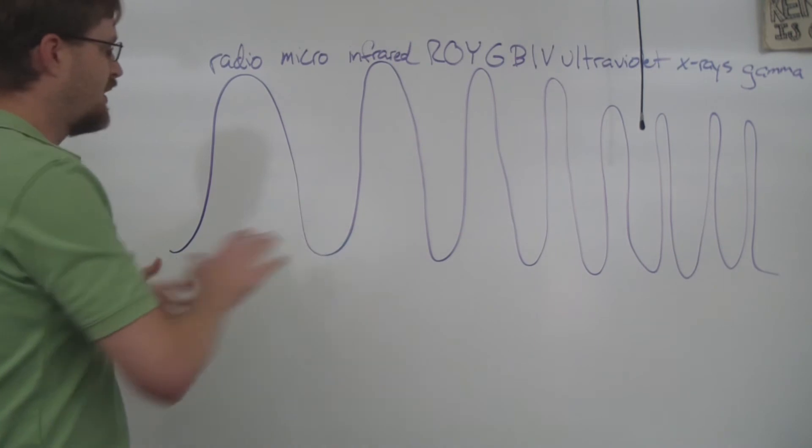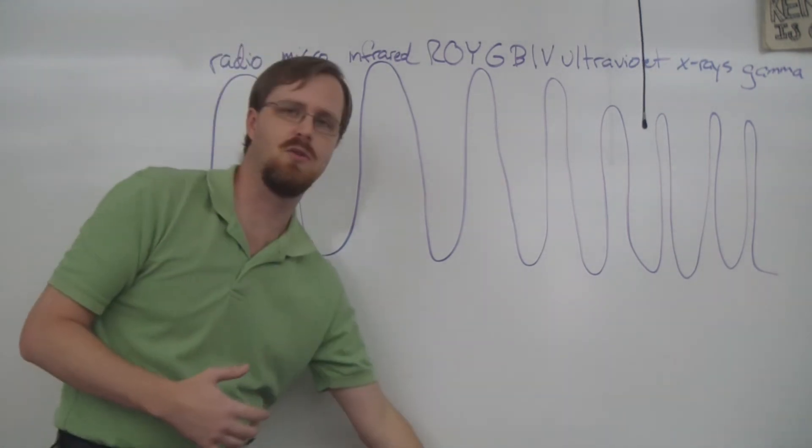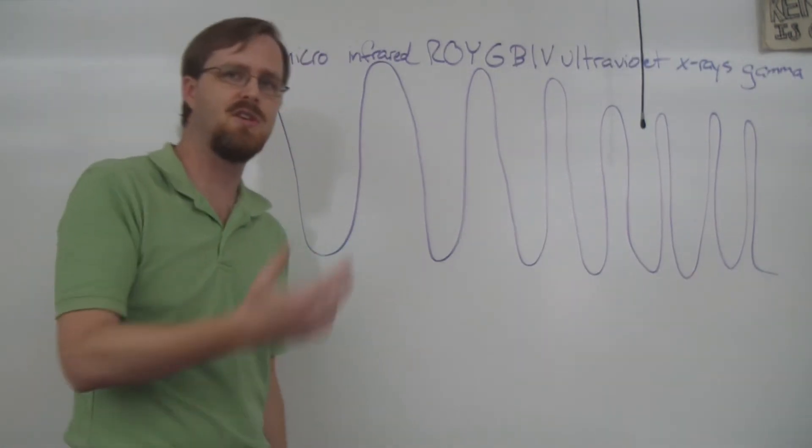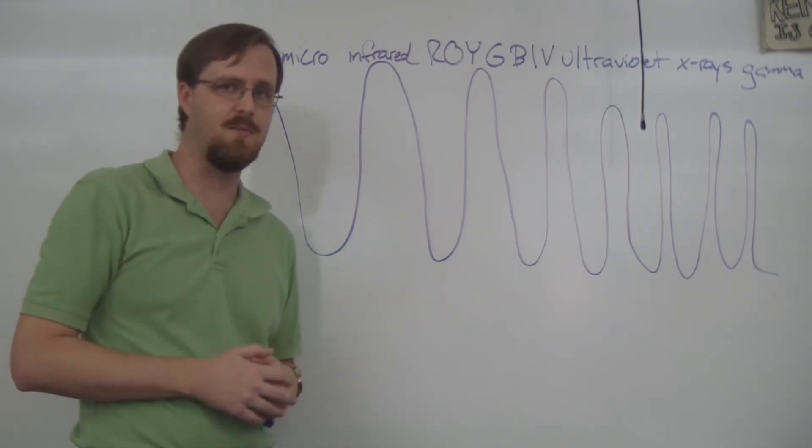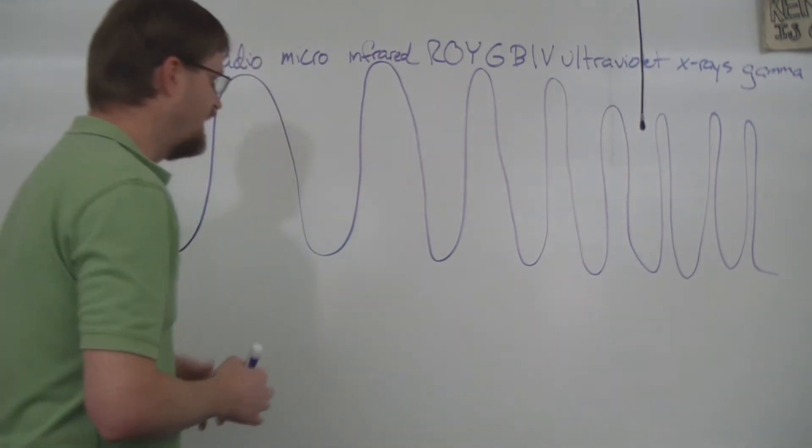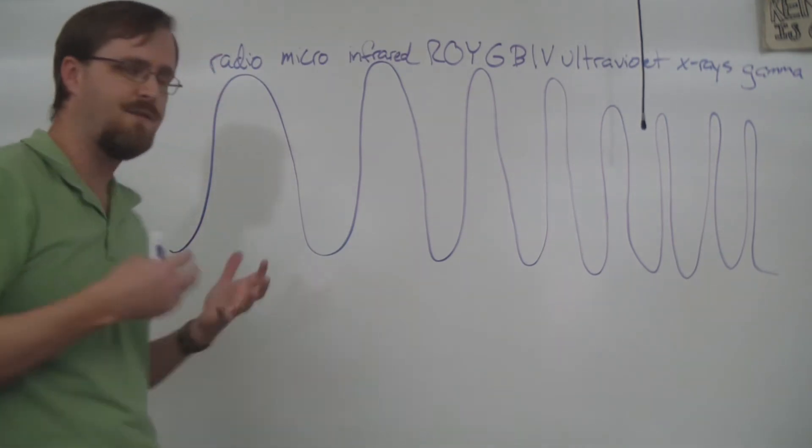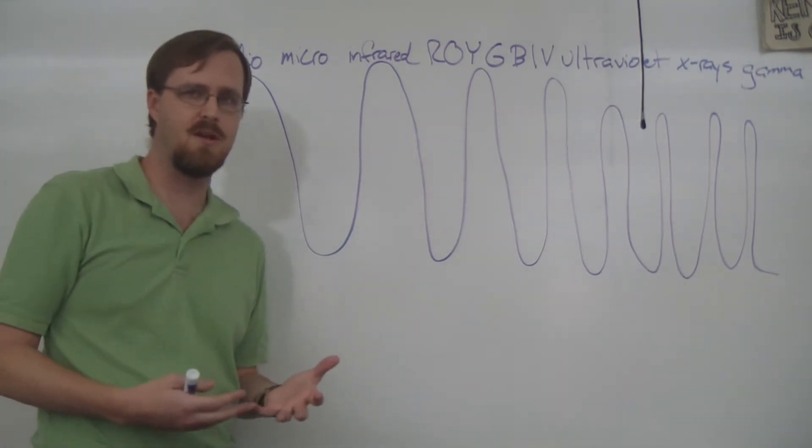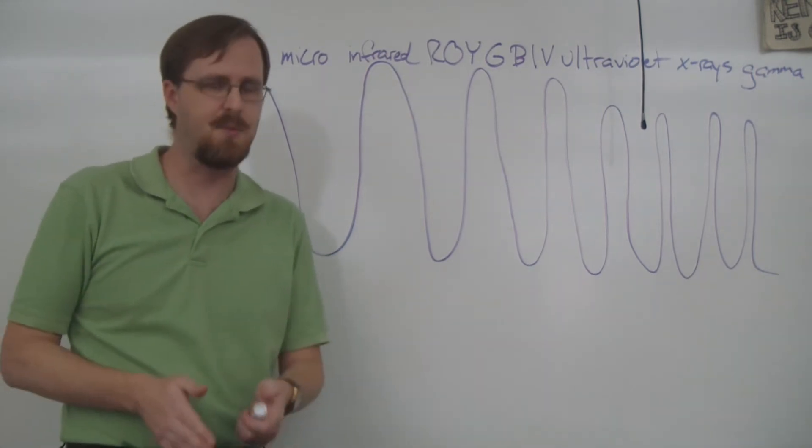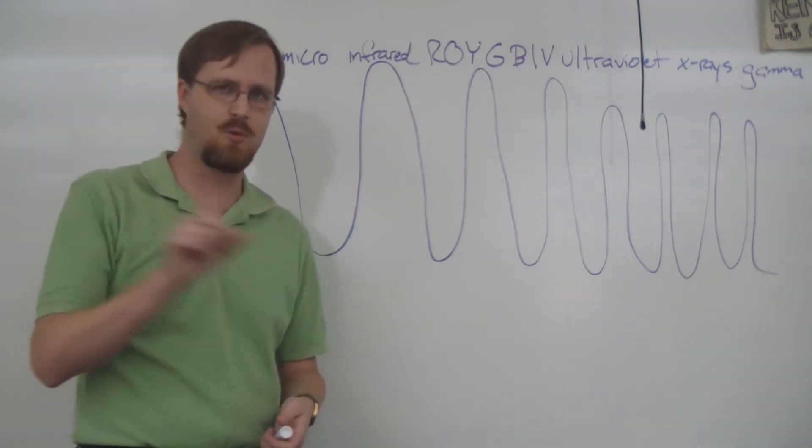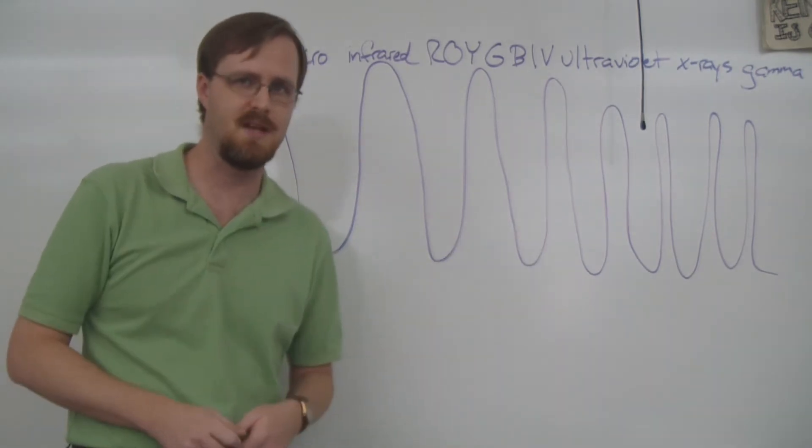As we look at this spectrum, we need to start measuring the different variables that are involved in the electromagnetic spectrum. There are three variables. The first one is frequency. Frequency, for lack of a better way to describe it, is simply the speed of a wave. So if I were to stand in one spot, and I counted how many waves passed by me in one second, that would be the frequency.